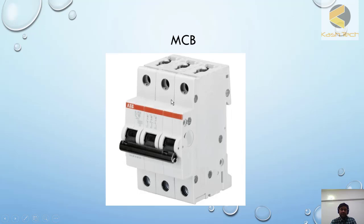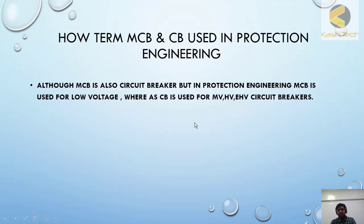This is basically a three-pole MCB from ABB. The designation CU16 means the rating of the MCB is 16 ampere. The symbol is shown here — just go through it, it's very simple.